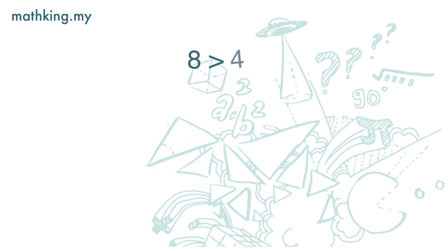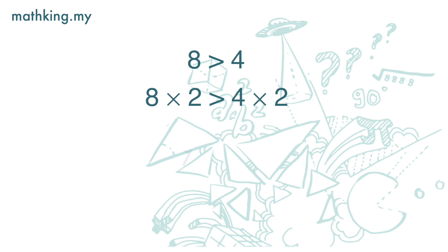Next let's look at multiplication. If I multiply both the left-hand side and the right-hand side by 2, then the left-hand side is 16 and the right-hand side is 8. So 8 times 2 is greater than 4 times 2 — this still holds true.